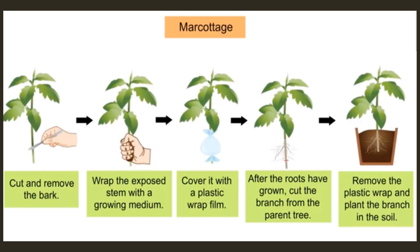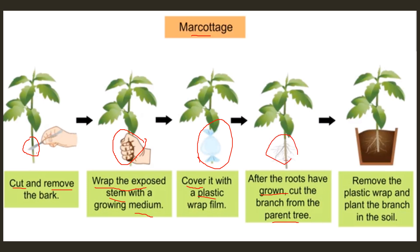Here are the steps for the marcottage technique. First, we have to cut and remove the bark at the stem. Next, we have to wrap the exposed stem with a growing medium — the medium we use here is soil, so we put soil there. Next, we have to cover it with a plastic wrap. After the root has grown, cut the branch from the parent tree. Roots will grow at the stem, and then we can remove the branch and put it into another soil.